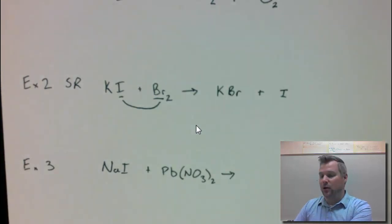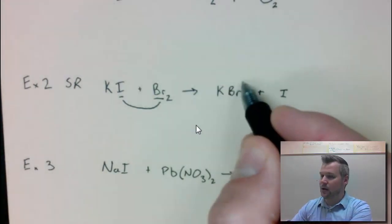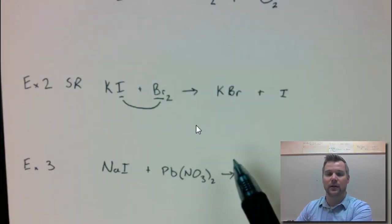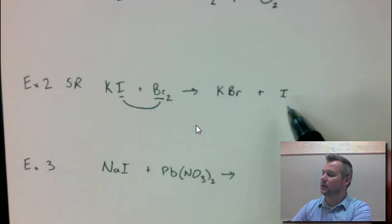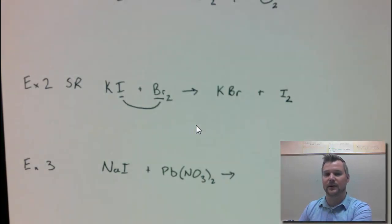My third step is to check charges. K is a plus 1, Br is a minus 1, so I don't need to do any crisscrossing on that formula. My fourth step is to look for elements. This element is on Hunklebrief, that's the I in Hunklebrief, so I need to do a subscript 2. And then my fifth step is to balance this thing.